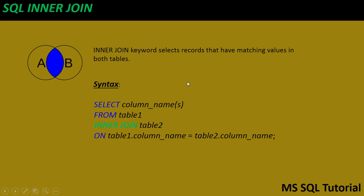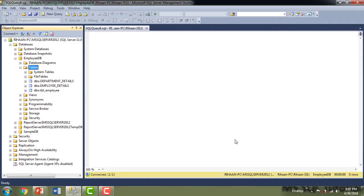Now we will see what is SQL inner join. SQL inner join returns records when there is a match in both tables. The inner join keyword selects records that have matching values in both tables. The syntax is: SELECT column names FROM table1 INNER JOIN table2 ON table1.column_name = table2.column_name.